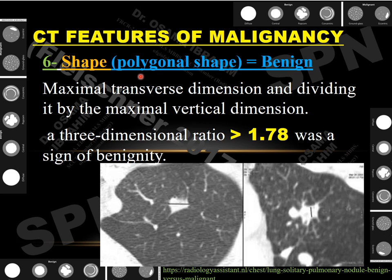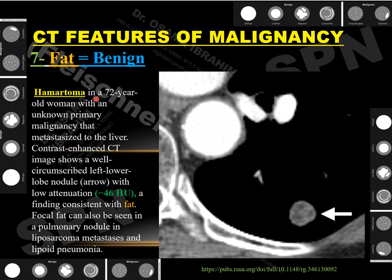The sixth feature is shape. A polygonal shape — with multiple faces and sides — is usually benign. By calculation, dividing the transverse diameter by the vertical diameter: if the ratio is more than 1.78, it is a sign of benignity. The seventh feature is fat. Presence of fat in a pulmonary nodule raises the possibility of benignity. A patient with unknown primary malignancy and liver metastases had a pulmonary nodule measuring -46 Hounsfield units, suggesting benignity despite the oncologic history. Note that liposarcoma metastasis can occasionally contain fat.